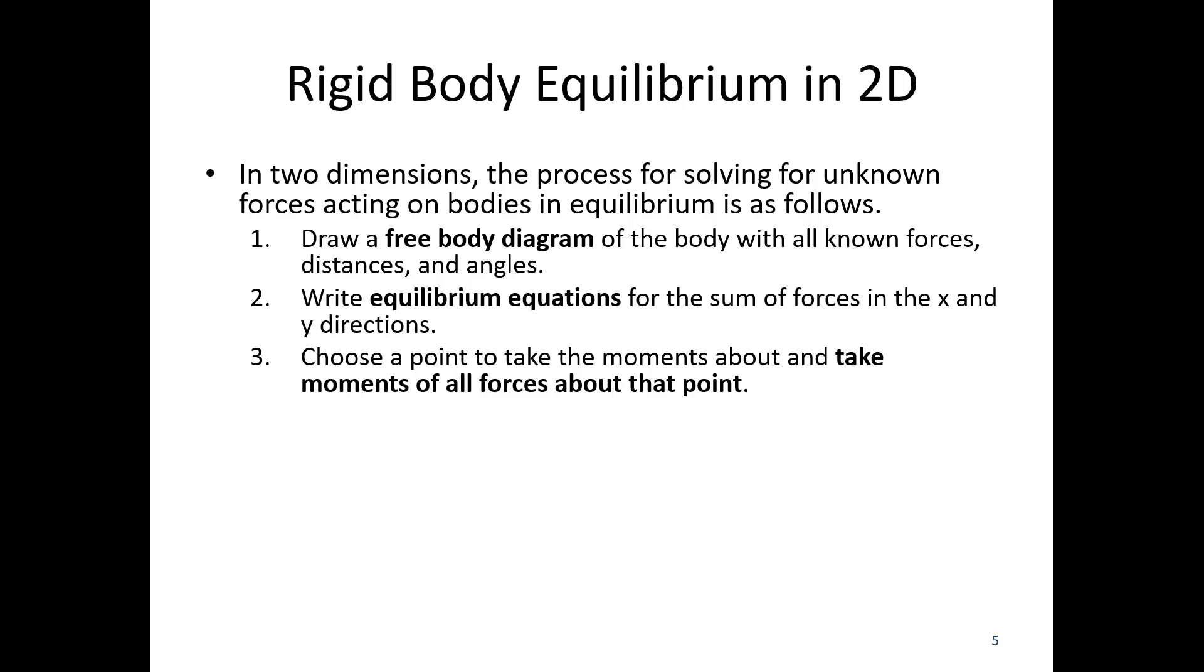That way you have less variables in your moment equation. After you choose your point, you want to take the moment of all forces about that point. If it's a known force, it's gonna be a known force times a known distance. If it's an unknown force, you just leave the force as an unknown times usually the known distance.